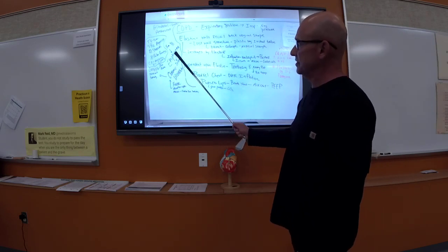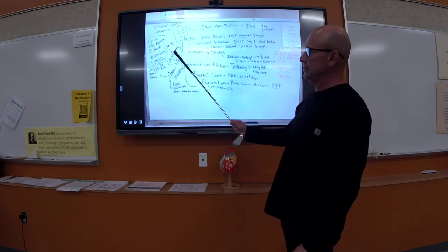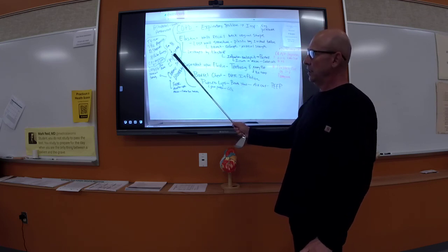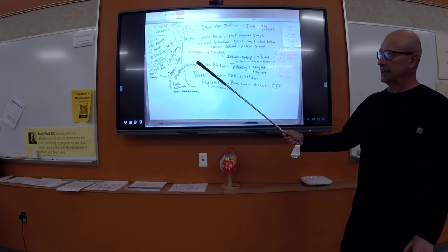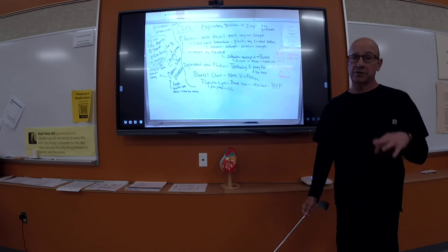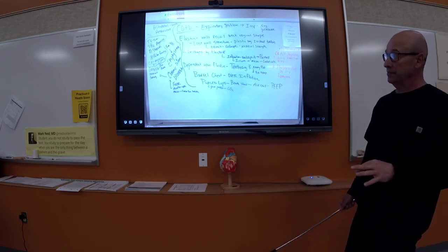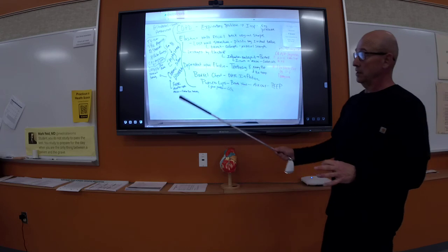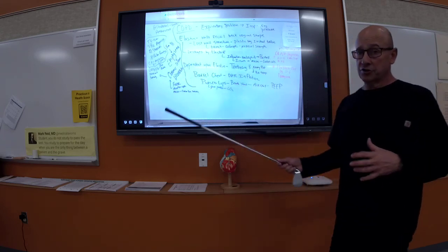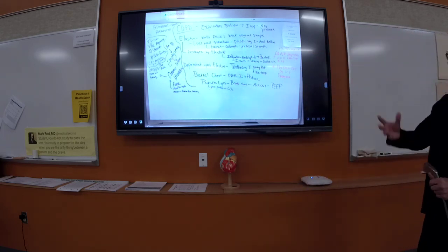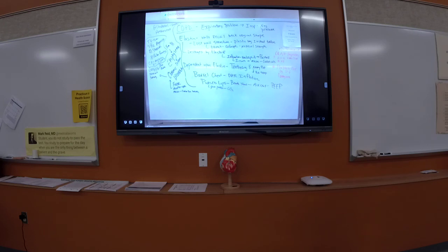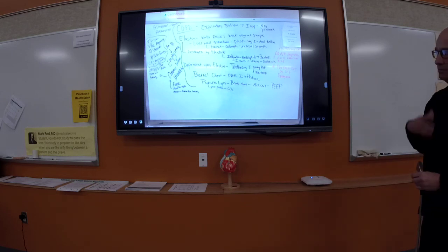The treatment is similar for COPD conditions: beta-2 agonist like albuterol, and in the hospital on the ALS side they'll give steroids to reduce inflammation over time, do pulmonary function checks, administer antibiotics for chronic bronchitis patients, and use CPAP if the patient is alert and oriented.